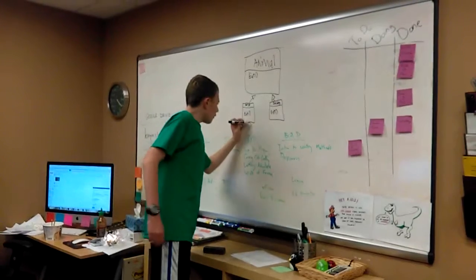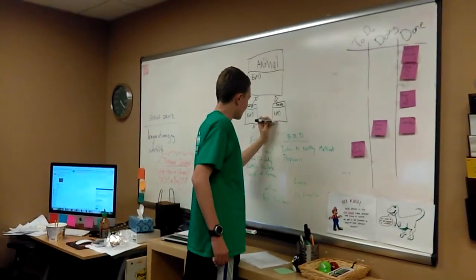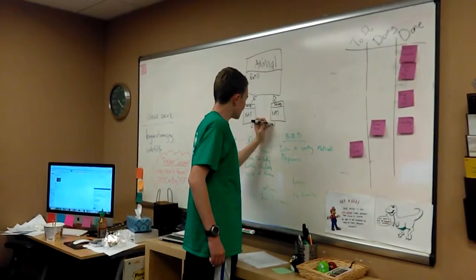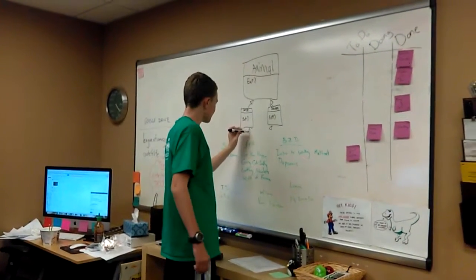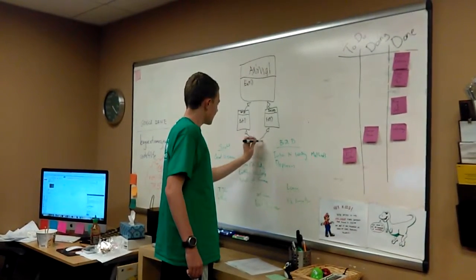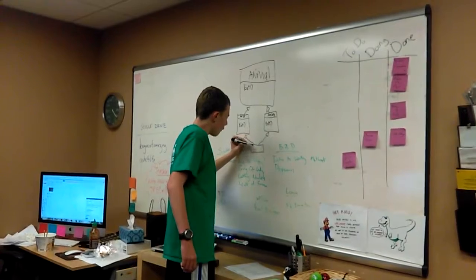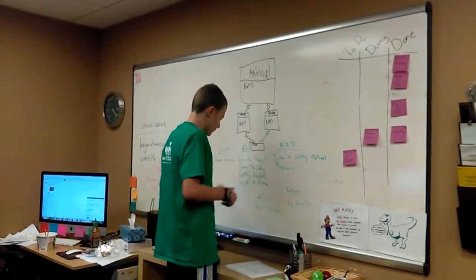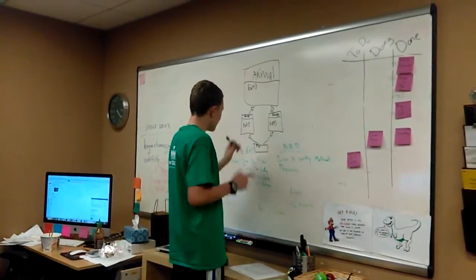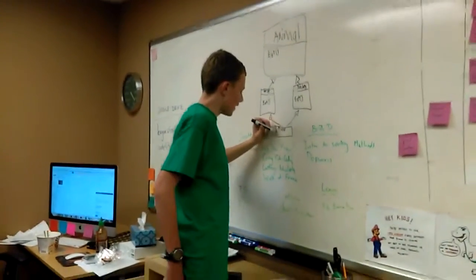Now suppose you had a class named Mule that inherited from both—oops, not mute—Mule that inherits from both Horse and Donkey.